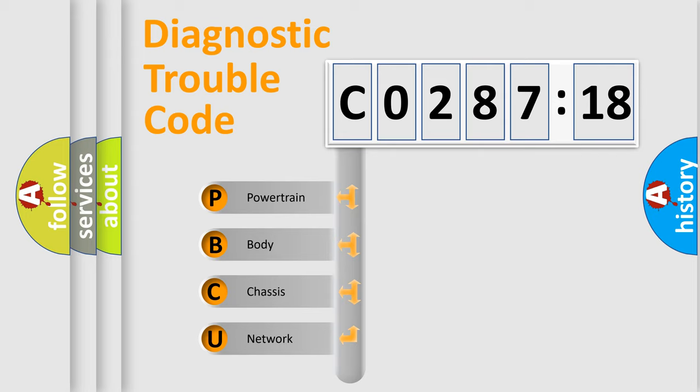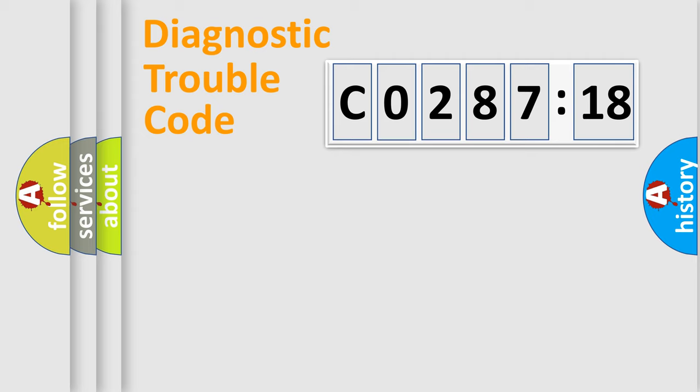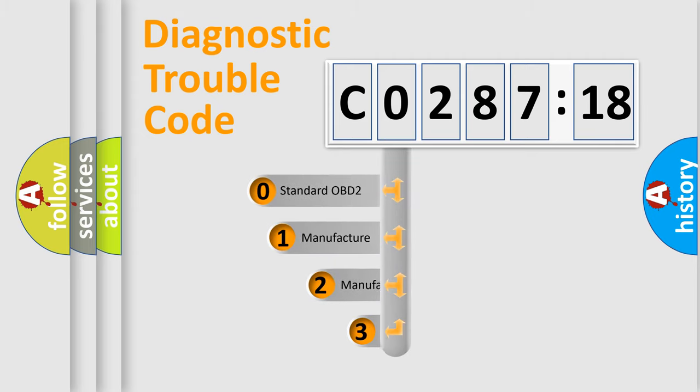We divide the electrical system of an automobile into four basic units: powertrain, body, chassis, and network. This distribution is defined in the first character code.